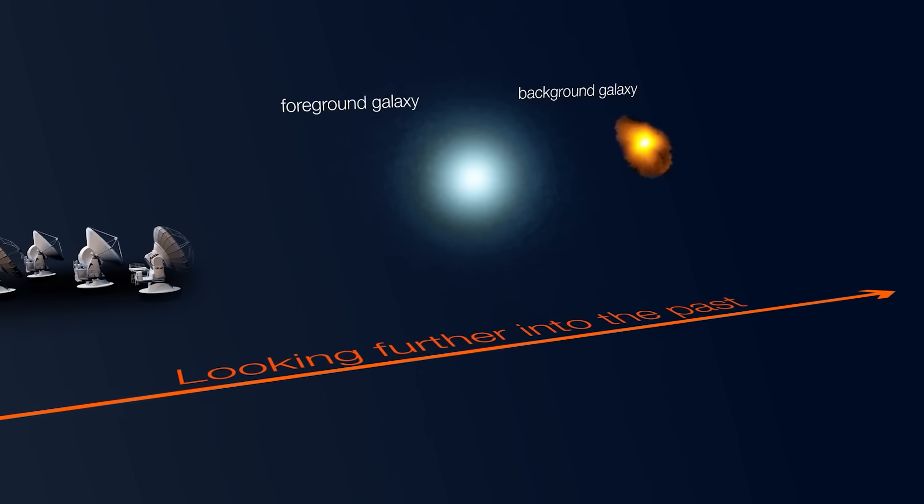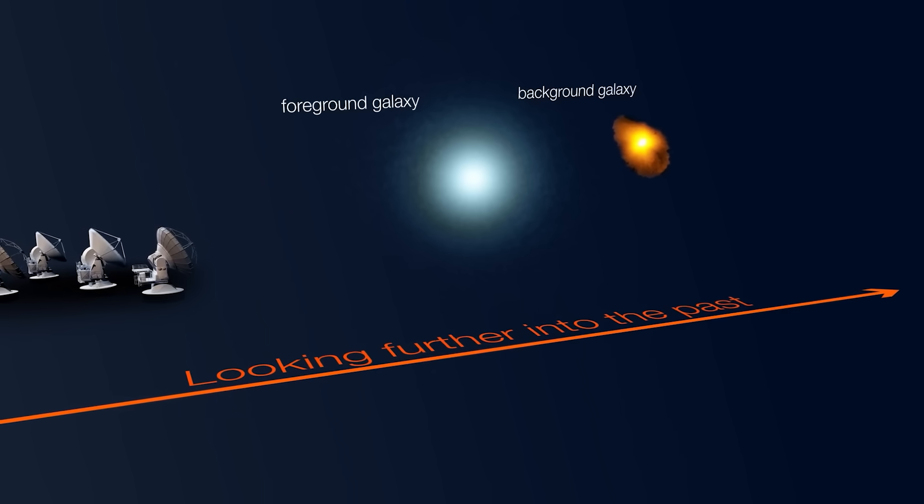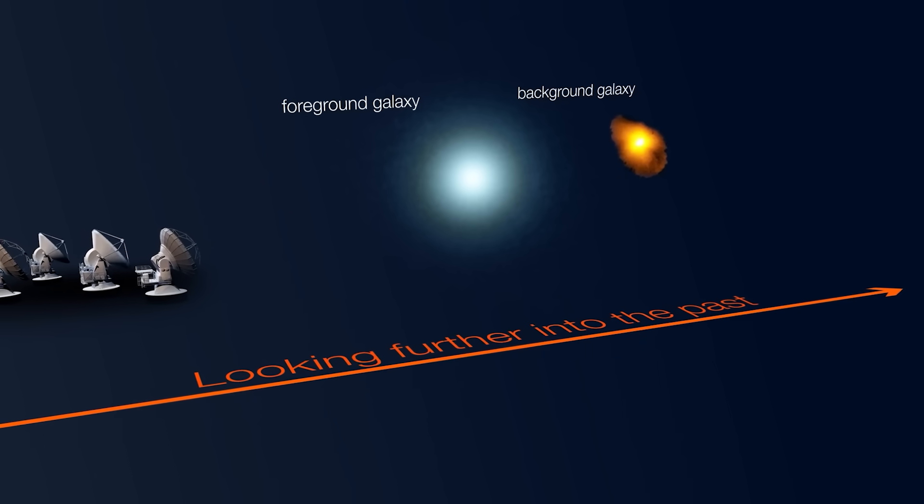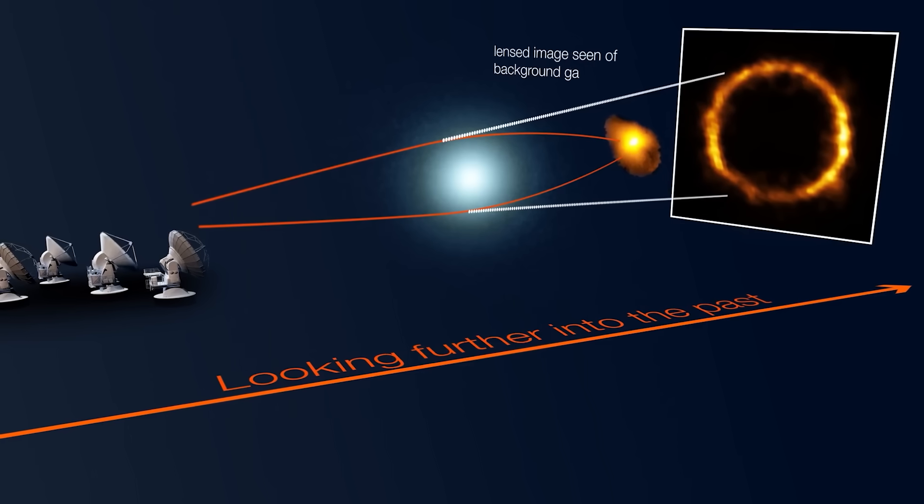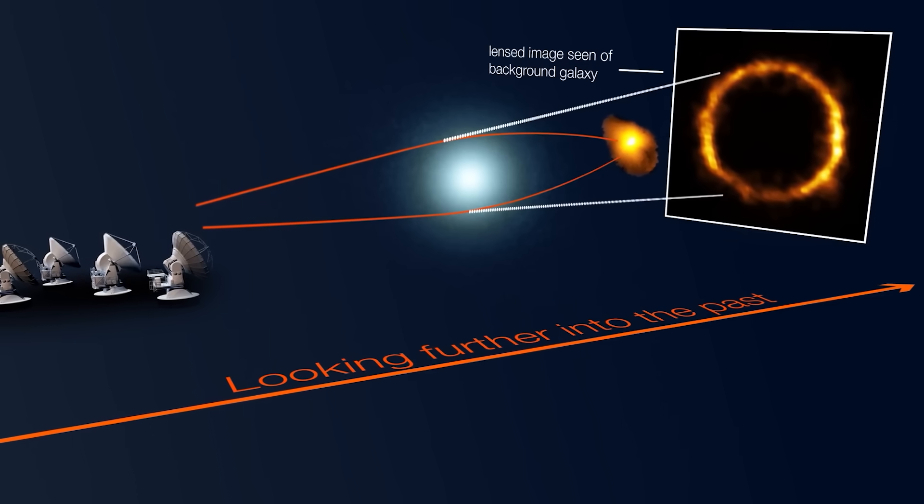The amount of bending depends on the mass of the lensing galaxy. If the alignment between the observer, the lens, and the background galaxy is perfect, the light forms a full glowing circle called an Einstein ring.